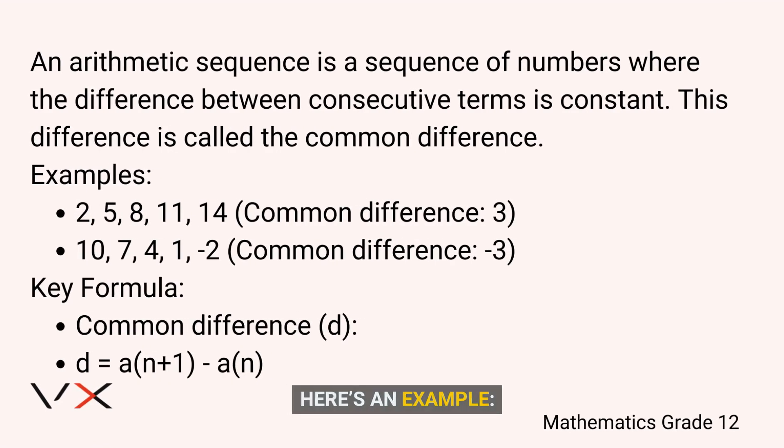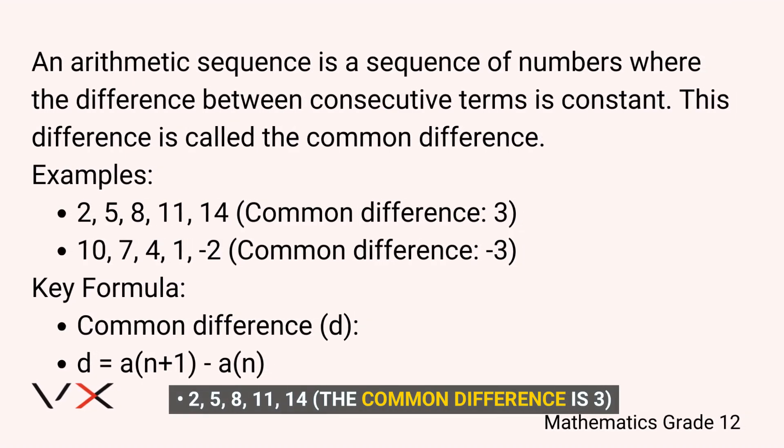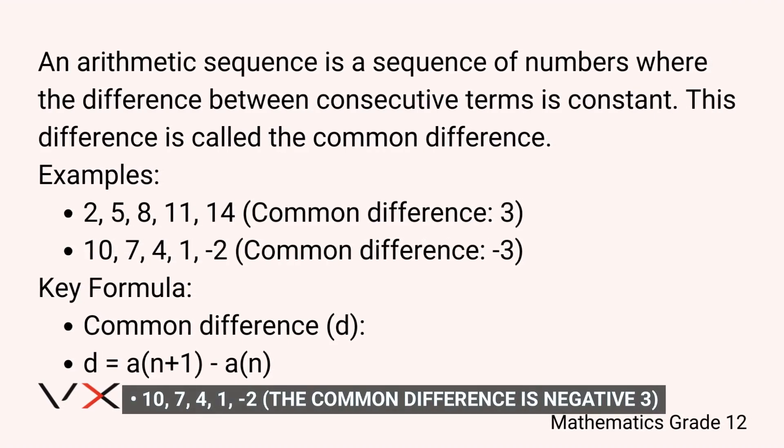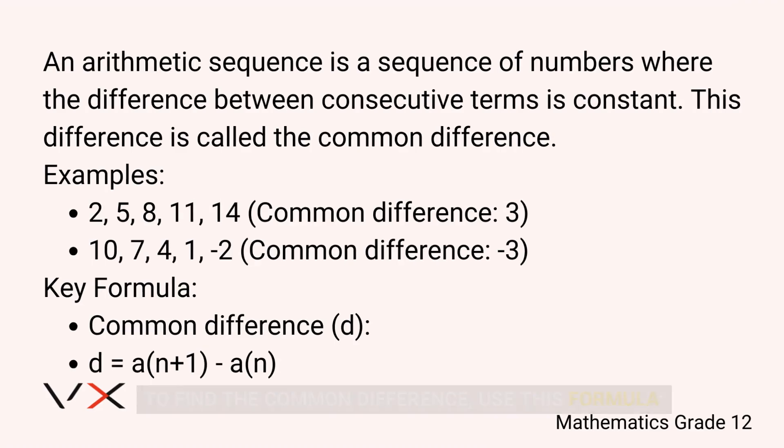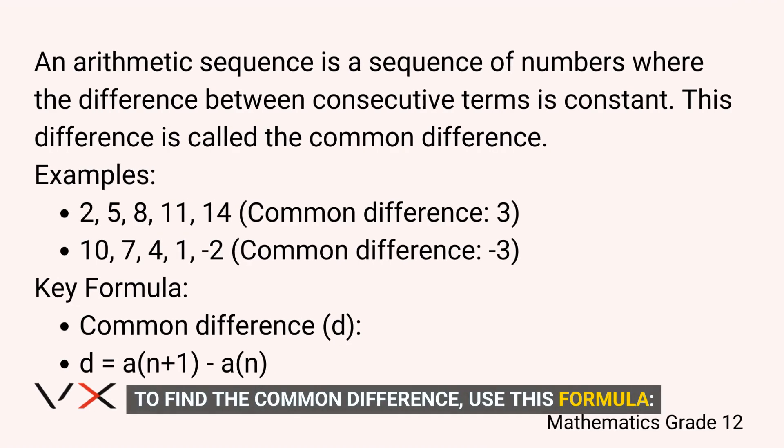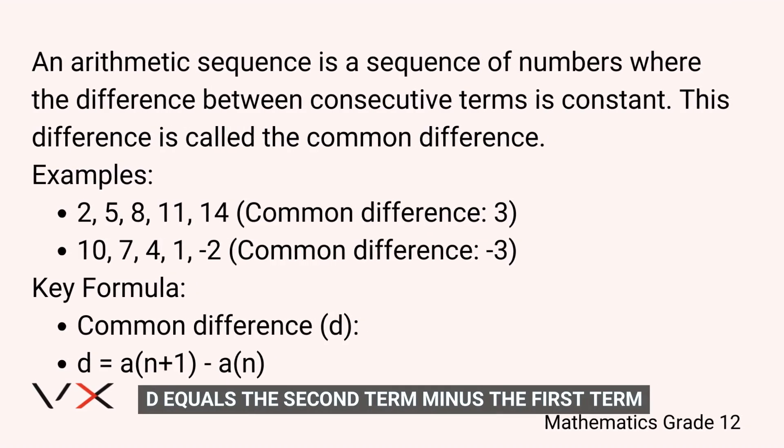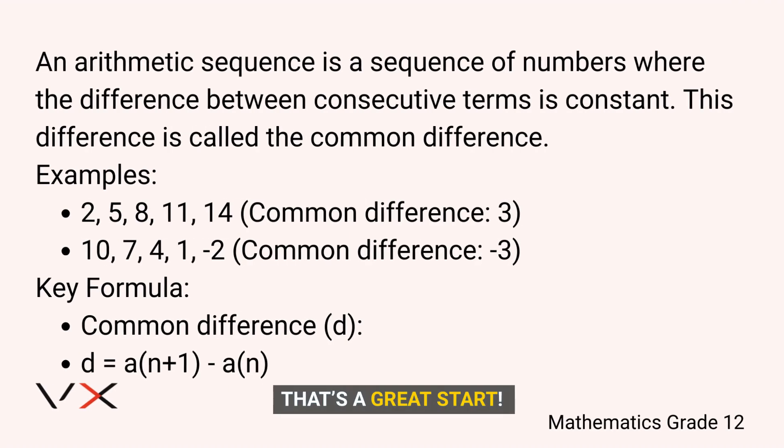Here's an example: 2, 5, 8, 11, 14. The common difference is 3. Another example: 10, 7, 4, 1, -2. The common difference is negative 3. To find the common difference, use this formula: d equals the second term minus the first term, or d equals a(n+1) minus a(n). That's a great start.